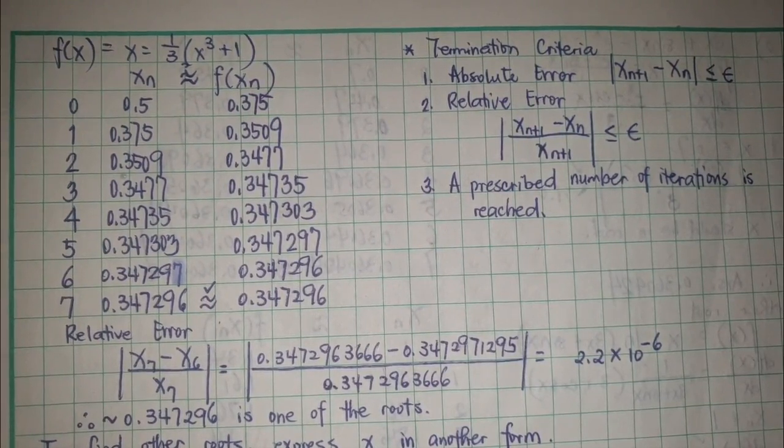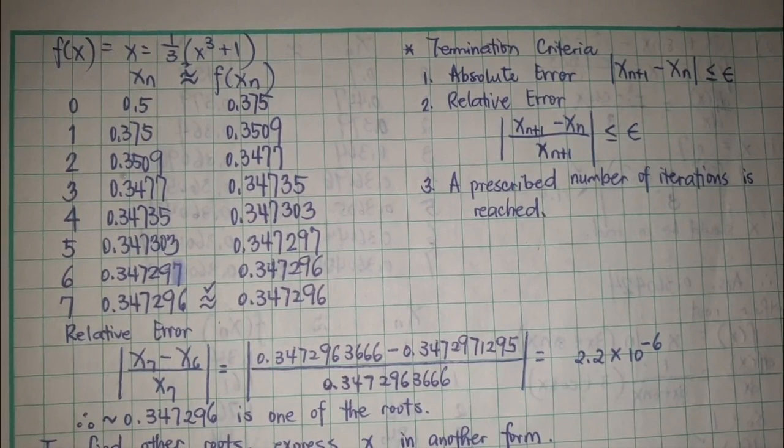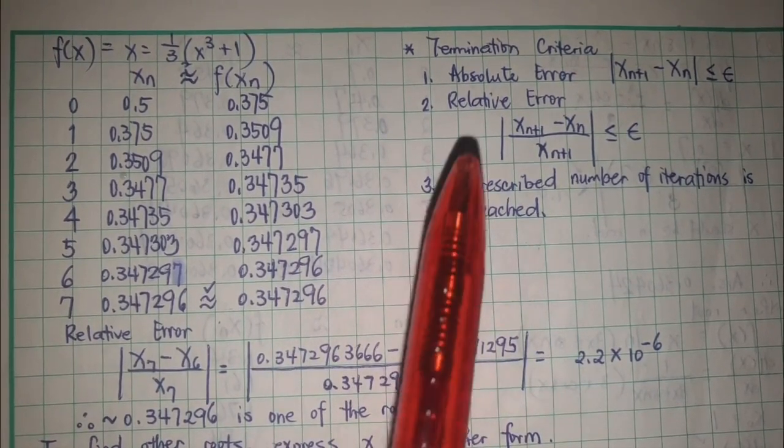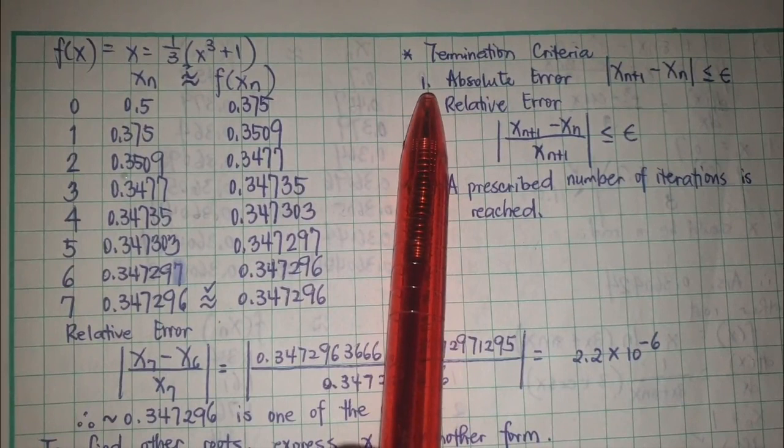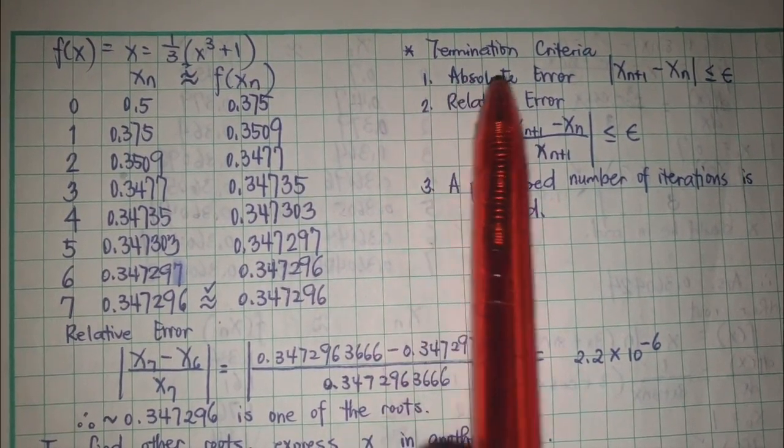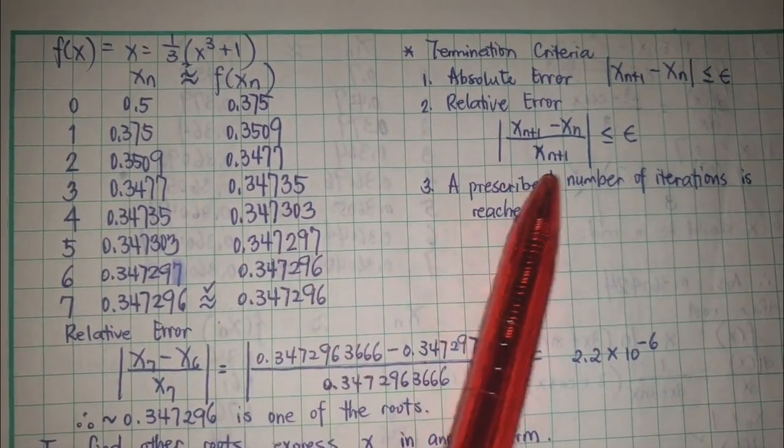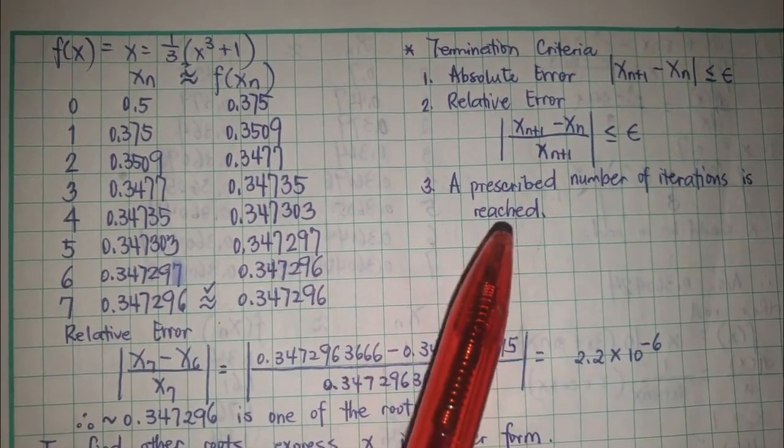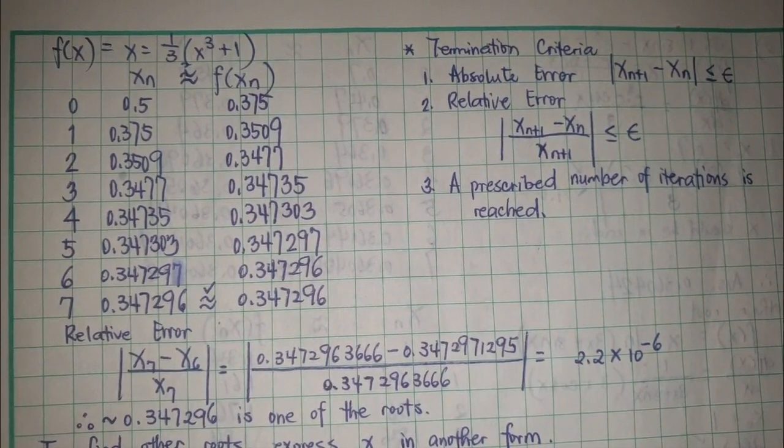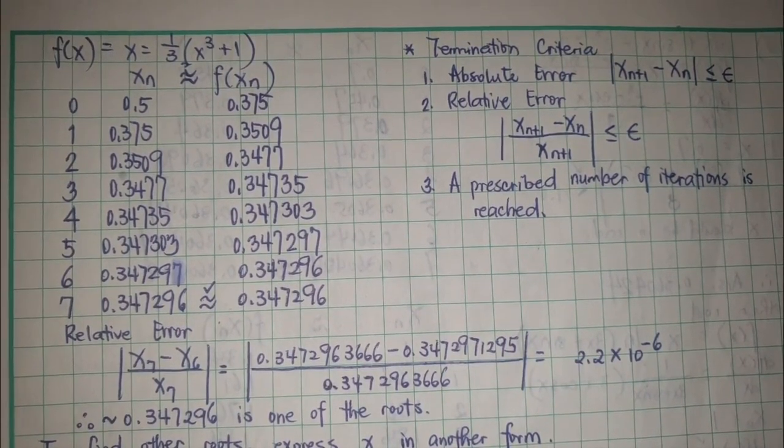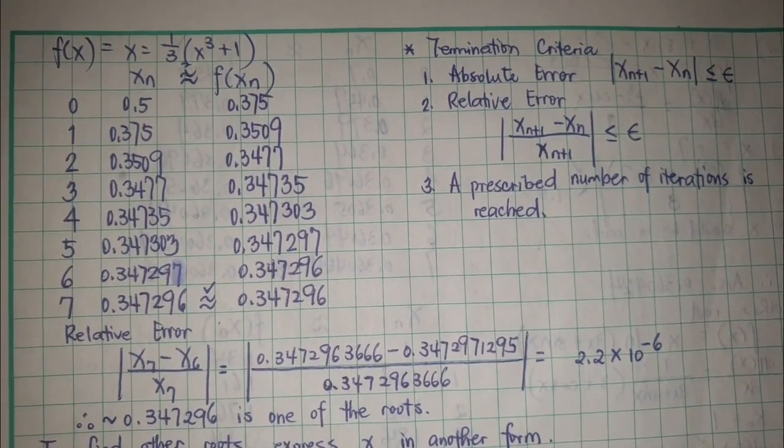When do we know if it's time to stop? As I said in my presentation, it depends on the termination criteria. If the absolute error is less than whatever error is given, if the relative error is less than whatever error is given, or after a prescribed number of iterations.